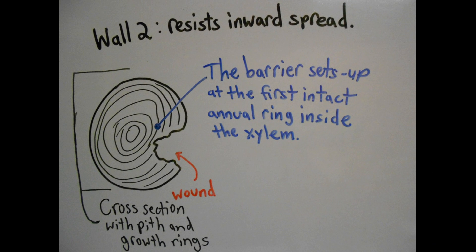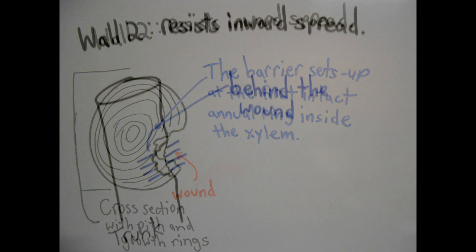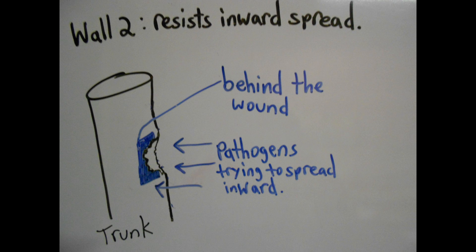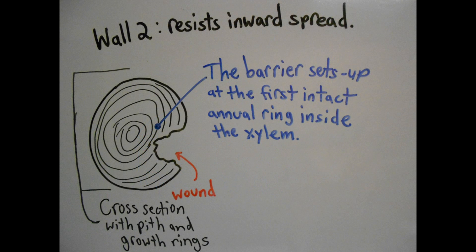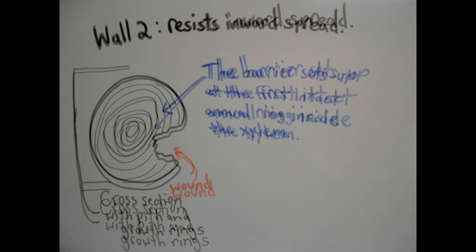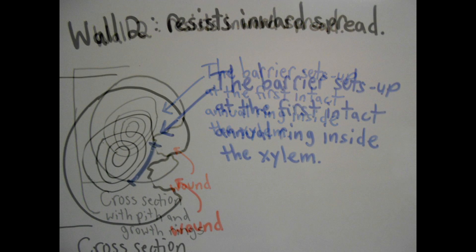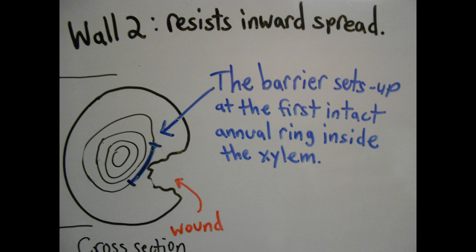The second zone, or wall two, sets up at the first intact annual ring inside the xylem. We describe this barrier as being behind the wound site, resisting the inward spread. In actuality, the second barrier is really the already present, lignified, woody cells from old growth. It acts as a barrier because the chemical inhibitor, lignin, present in the rings cannot be digested by most microorganisms. A build-up of lignin will turn sapwood into heartwood, which also acts as a barrier. Wall two is stronger than wall one.